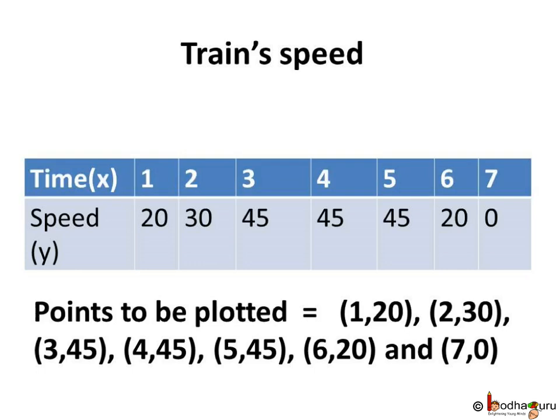Then, brakes were applied and its speed dropped to 20 km per hour at 6th minute. Thus, the next point to be plotted is (6,20). Meaning, 6 on the x-axis and 20 on the y-axis.